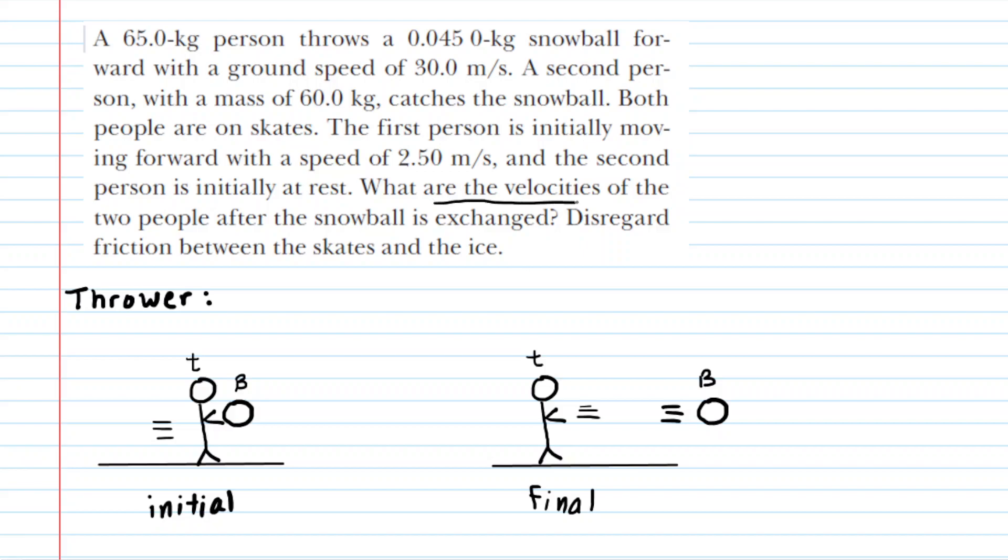The question asks us to calculate the velocities of the two people after the snowball is exchanged. We have one person throwing the snowball and another person catching it, and what we can do to solve the question is analyze each person individually.